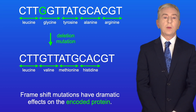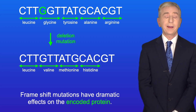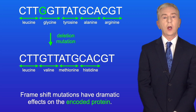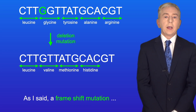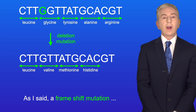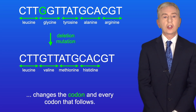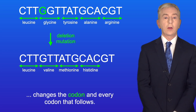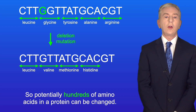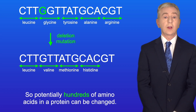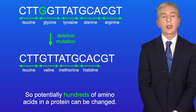Frame shift mutations have dramatic effects on the encoded protein. A frame shift mutation changes the codon and every codon that follows, so potentially hundreds of amino acids in a protein can be changed.